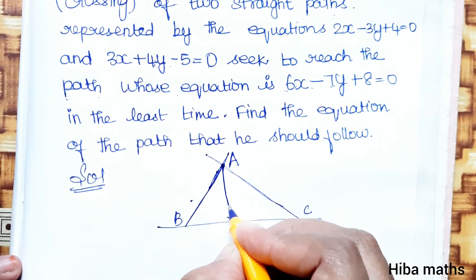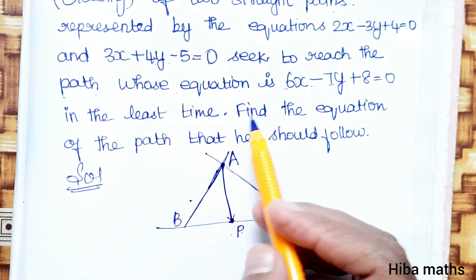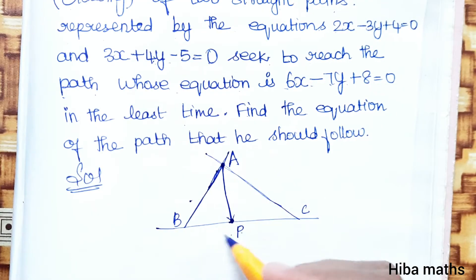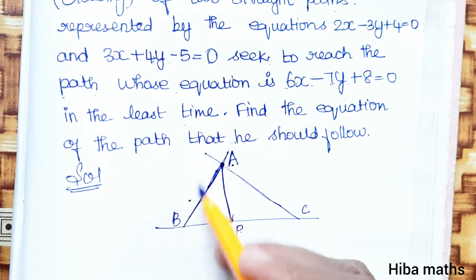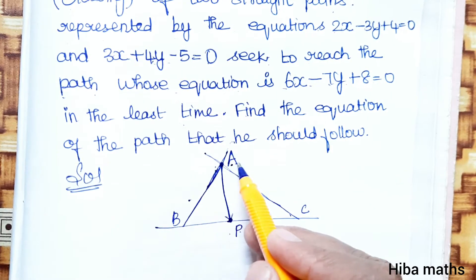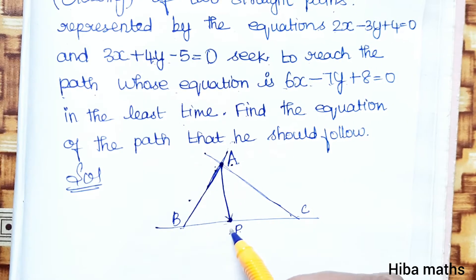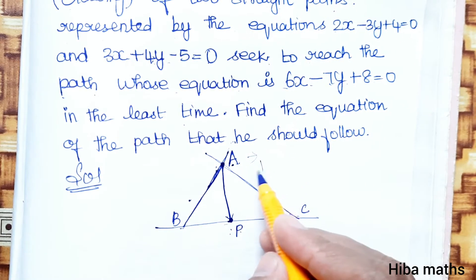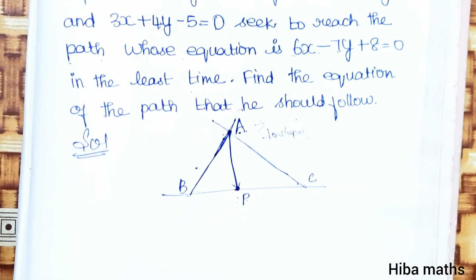In the least time, find the equation of the path that he should follow. So A-P is the equation we need. One line intersects at the crossing point of the two lines. The required path will be perpendicular to the given line. We need two conditions: one is the intersection point, and the other is the perpendicular slope.